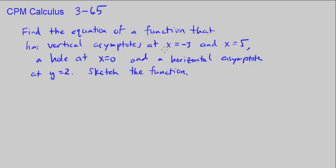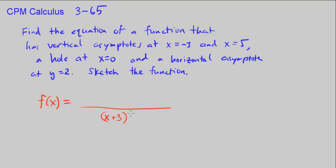Vertical asymptotes at x equals negative 3 and x equals 5 means our function f of x has to be undefined at those values. That means in the denominator we want to have (x plus 3), because plugging in negative 3 makes it 0, and (x minus 5), because plugging in 5 makes it 0.